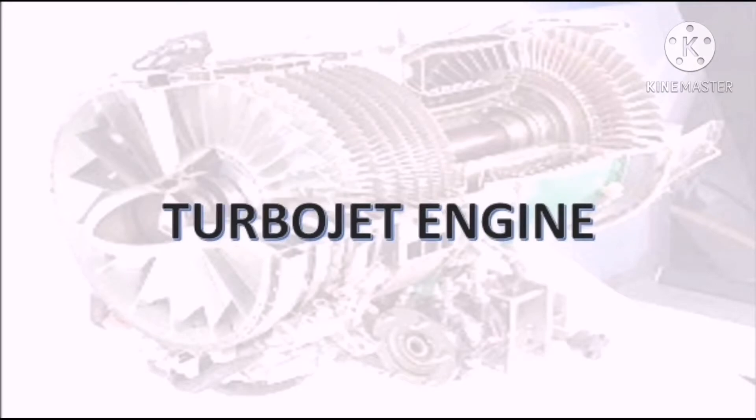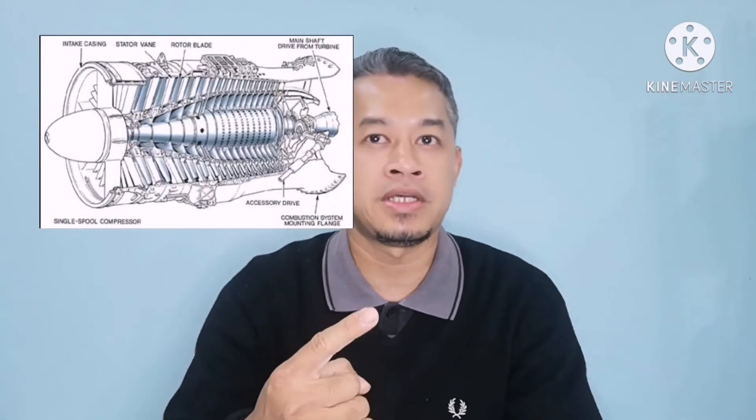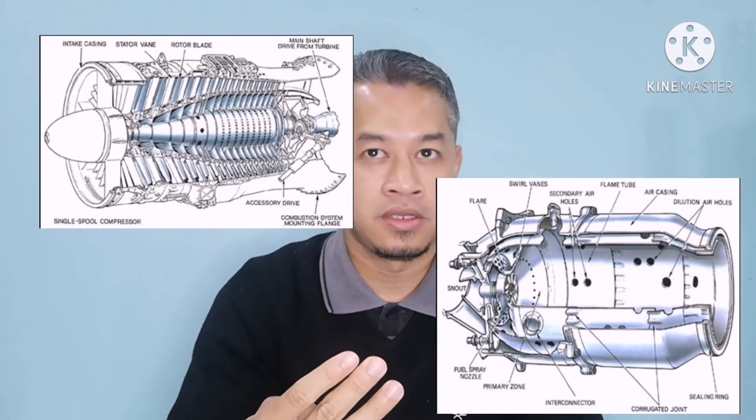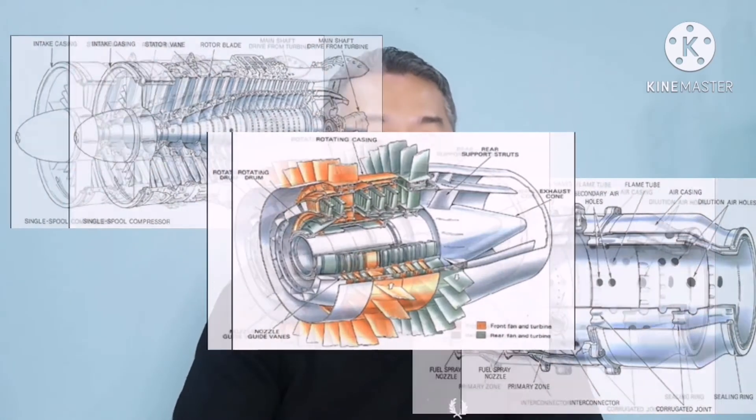In a turbojet engine, the main components involved are the compressor, combustion chamber, and turbine. The turbojet now serves as the engine core for all aerospace gas turbine engines.